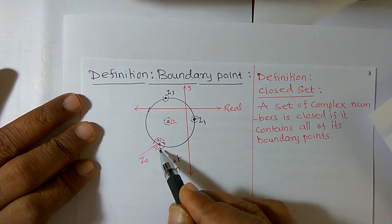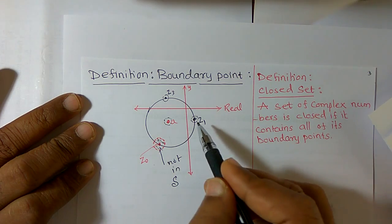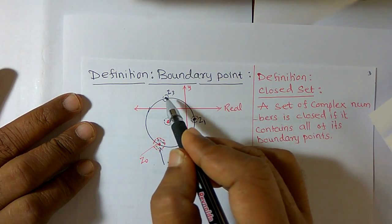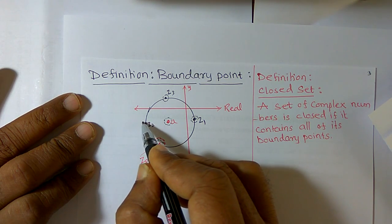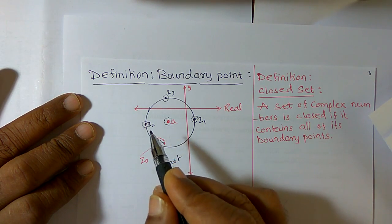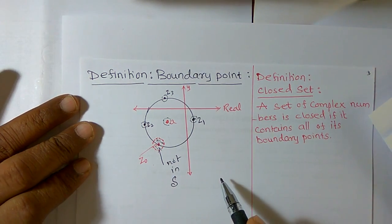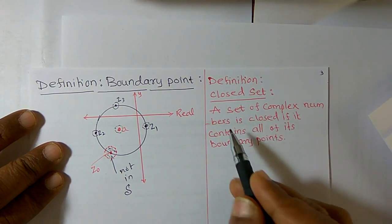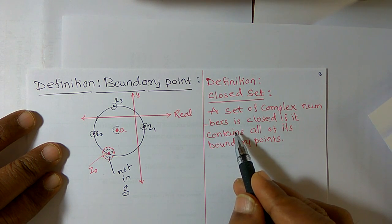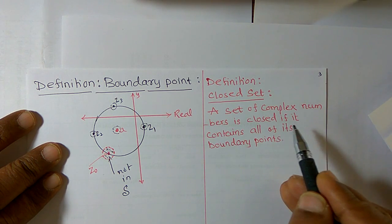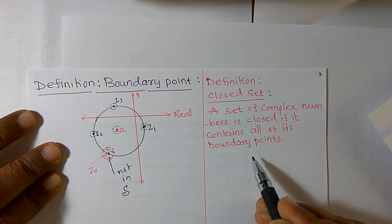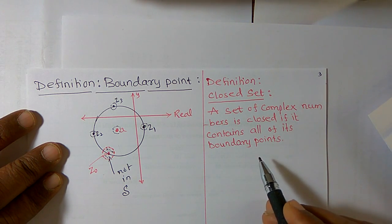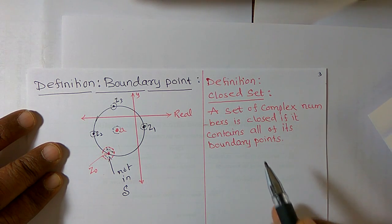Some points belong to the region and some points do not belong to the region. Similarly, z1 is also a boundary point, z3 is also a boundary point. You can take z2 and construct an open disk — z2 is also a boundary point. Now, a closed set: a set of complex numbers is closed if it contains all of its boundary points. Any set containing all its boundary points is a closed set. Thank you.